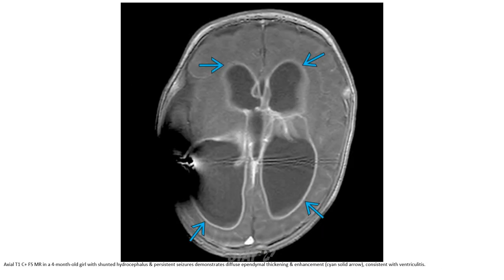T2-weighted MRI in a four-month-old with shunted hydrocephalus and persistent seizures. There is diffuse ependymal signal and enhancement, consistent with ventriculitis.